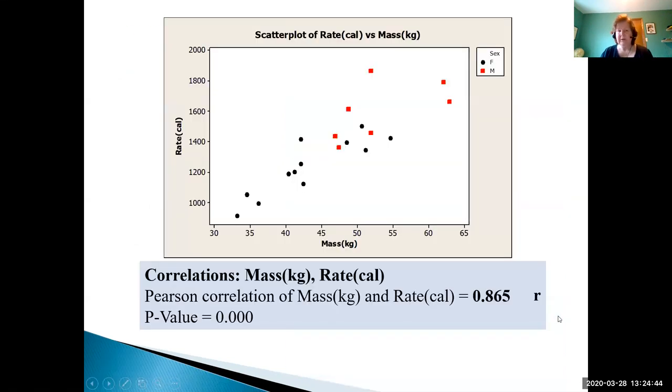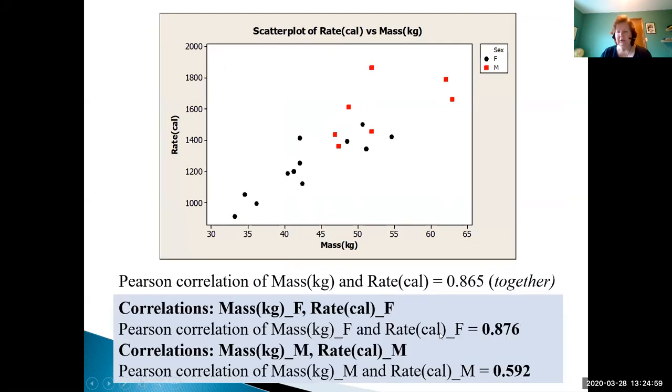Going back to our data for the mass versus metabolic rate, the correlation coefficient with everybody together was 0.865. Don't worry about this p-value, we don't get involved in p-values for regression. If I actually look at them separately, so here it is together, the females by themselves is 0.876, the males not so good at 0.592, because we don't have as many male data points and they are quite scattered.